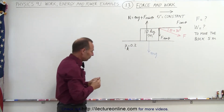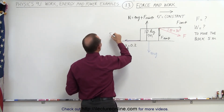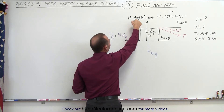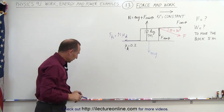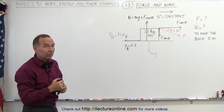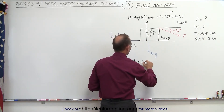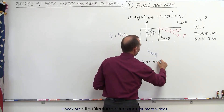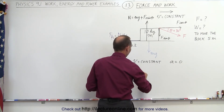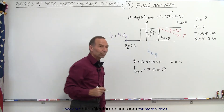The friction force will be in the opposite direction of the motion of the block, and by definition the friction force equals the normal force times the coefficient of friction. Since we're told there's no acceleration — v is constant — that implies a equals zero, and since F-net equals mass times acceleration, the net force must be zero as well.